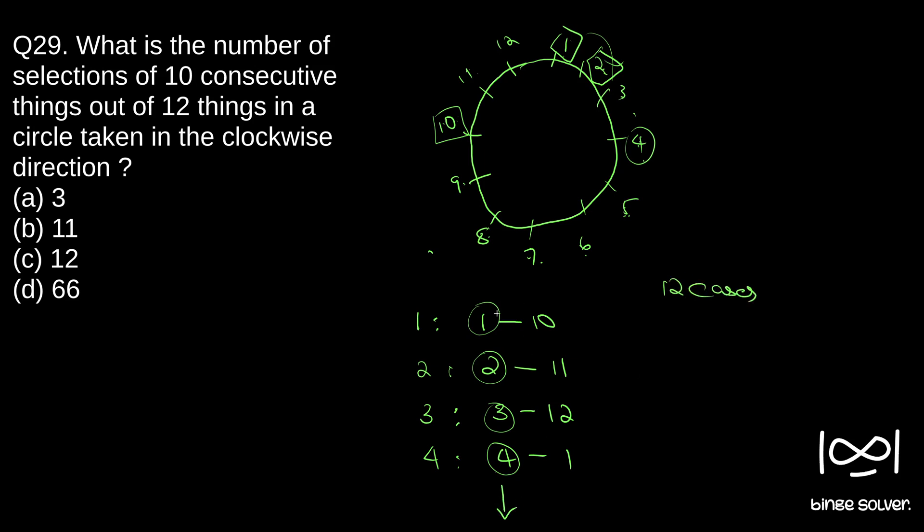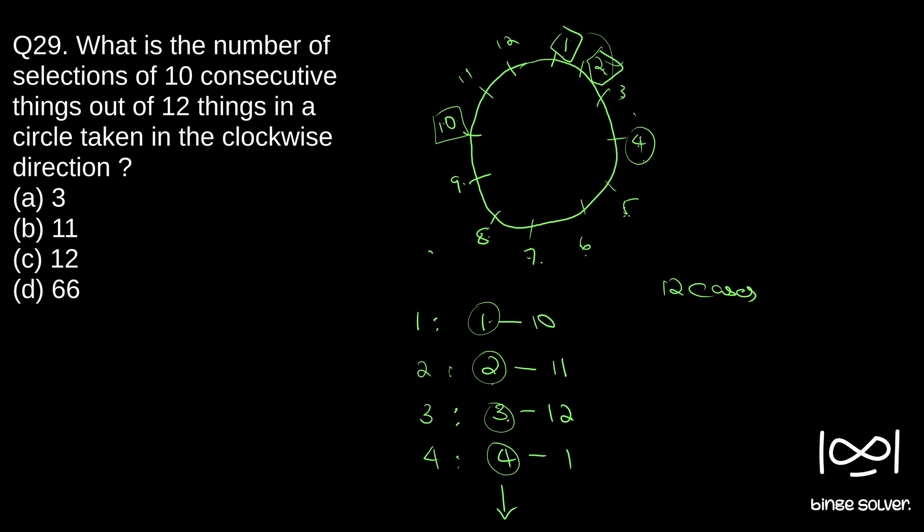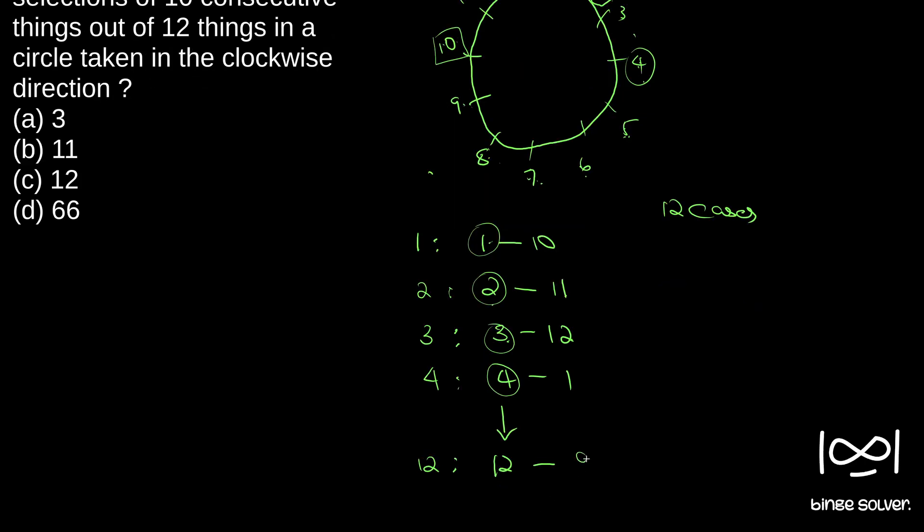If we continue, we will have 1 to 10, 2 to 11, 3 to 12. Similarly, at the end, our 12th choice will be 12 to, if we begin with 12: 1, 2, 3, 4, 5, 6, 7, 8, 9, 12 to 9. So this will be our 12th case.